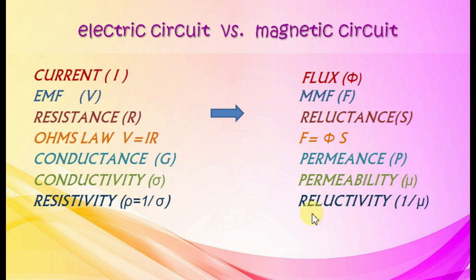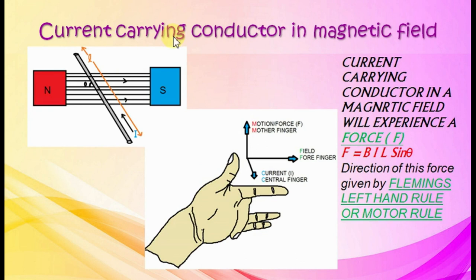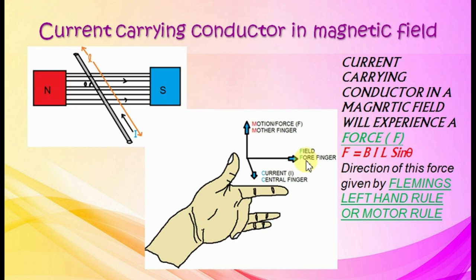A current-carrying conductor in a magnetic field experiences a force F equals B I L sine theta, where B is flux density, I is current, L is length of conductor, and theta is the angle between conductor and flux. The direction of this force is given by Fleming's left-hand rule (motor rule): with thumb, forefinger, and middle finger in mutually perpendicular directions — thumb represents force, forefinger represents field, and middle finger represents current. This law is used in electric motors.